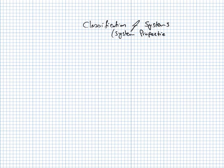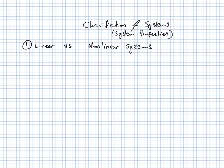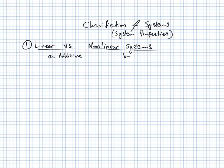Classification of systems — or system properties — allows us to classify systems into different categories. The first property is linear versus nonlinear. A linear system must satisfy two important properties: A) it must be additive, and B) it must be homogeneous.